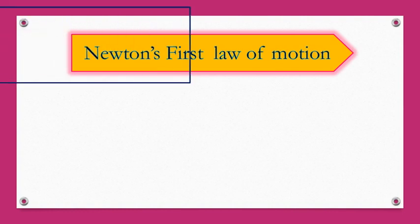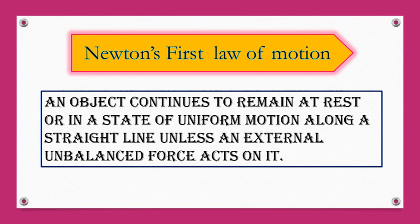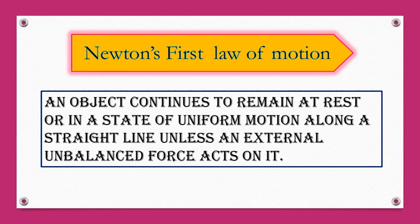Newton's First Law of Motion. The statement is: An object continues to remain at rest or in a state of uniform motion along a straight line unless an external unbalanced force acts on it. This law explains the phenomenon of inertia, that is the inability of an object to change its state of motion on its own. It also explains that unbalanced forces cause a change in the state of an object at rest or in uniform motion.